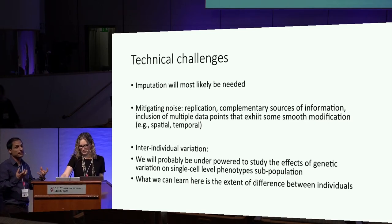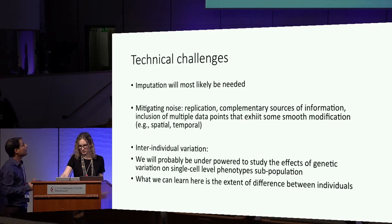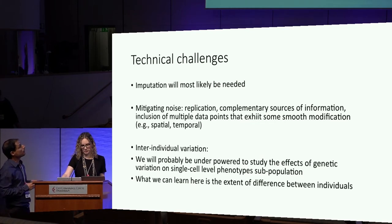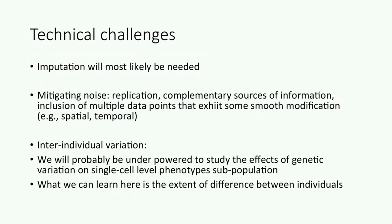The idea was to use everything we can to mitigate noise — looking at replication, looking at complementary data sources. The ideal, of course, would be to look at chromatin from the same single cells, including multiple data points. We can mitigate noise by looking at some sort of smooth transition, maybe across a longer tissue section or a long time course, which will hopefully help smooth out some of the noise.